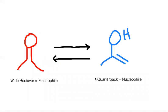Of course, in tautomerization, it can again transform itself back to a wide receiver when needed. This transformation between quarterback and wide receiver — or wide receiver to quarterback — is tautomerization.